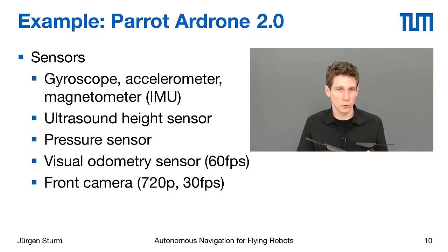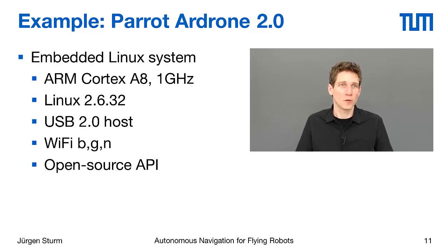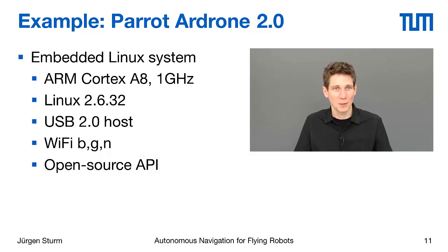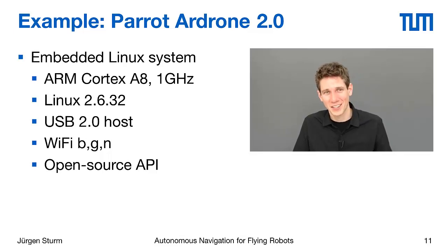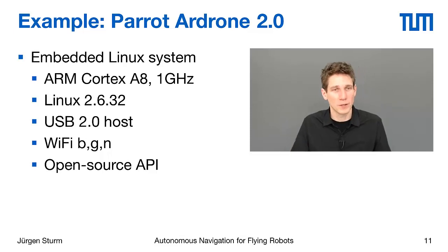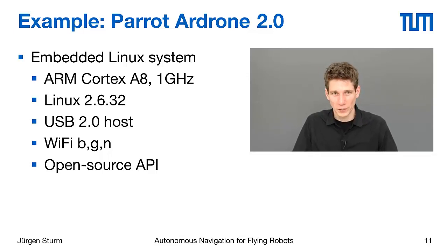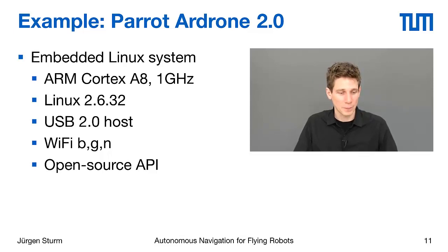There is also a front-facing camera at HD resolution accessible from the PC. At the core of the Parrot AR Drone is a full Linux system running on a Cortex A8 processor at 1 GHz, which you can log into by telnetting to the computer. It has a USB 2 host adapter so you can add additional hardware such as memory or a GPS module, and it carries a wireless network adapter for communication while airborne. The API is fully open source, making it possible to send motion commands and receive all sensor data.